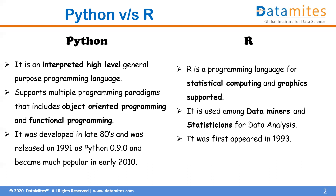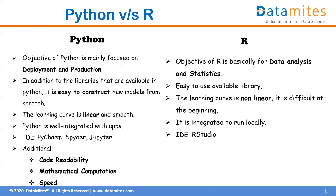Python supports multiple programming paradigms. As a high-level general-purpose language, it enables object-oriented programming and functional programming, giving users a wide platform to build many things. R first appeared in 1993, whereas Python was developed in the late 1980s, released in 1991 as version 0.9.0, and became most popular in the early 2000s.